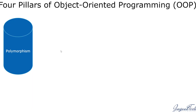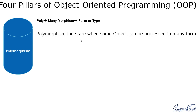Before starting, let's understand what exactly polymorphism is. As we see the name, let's break it into two parts: 'poly' which means many, and 'morphism' which means form or type. When we combine it, it states that the same object or methods can be processed in many forms. That is basically polymorphism.